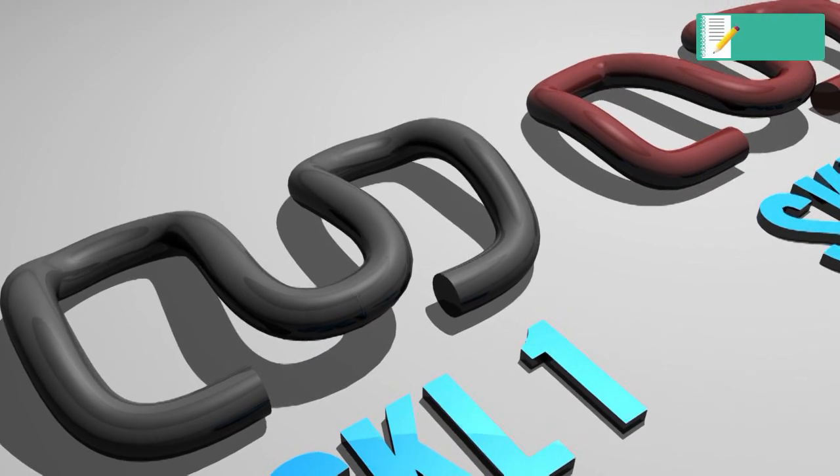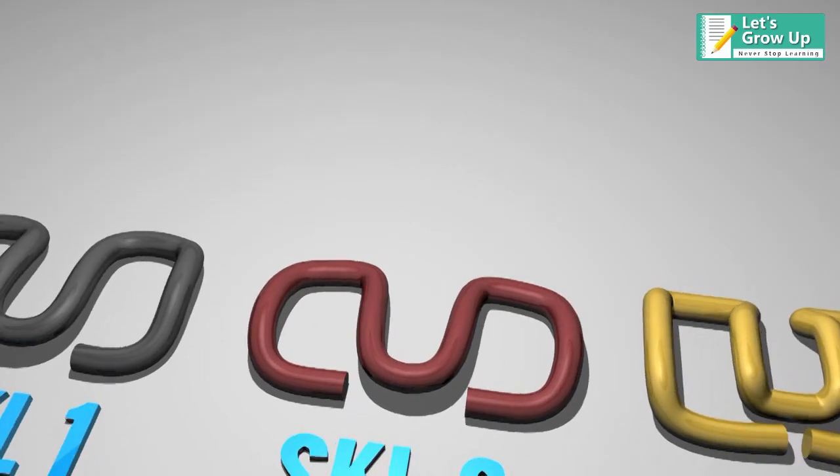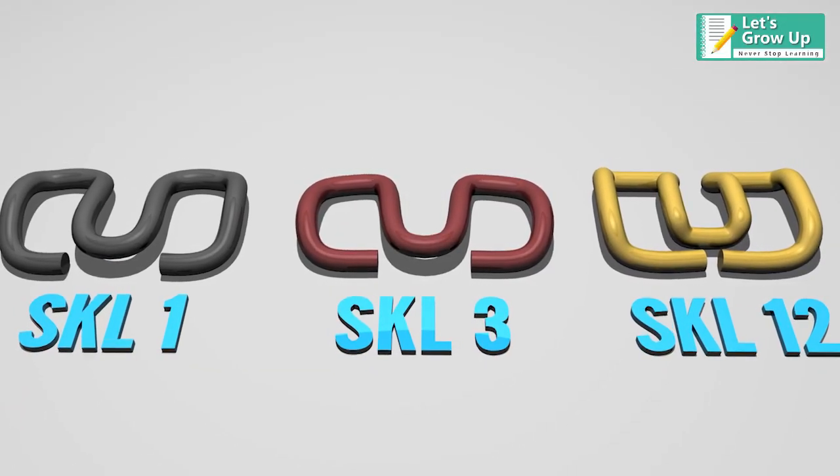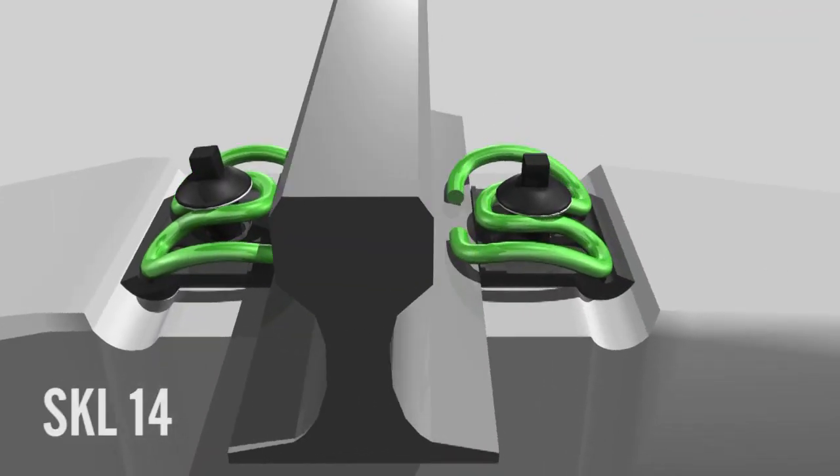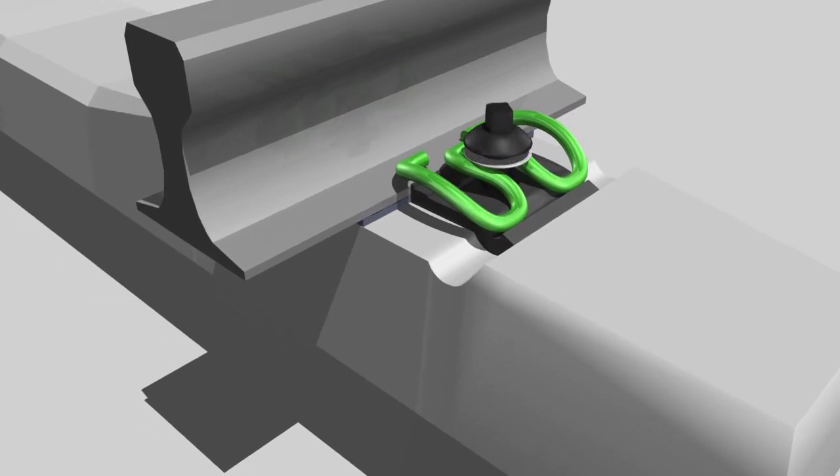There are different types of SKL rail clips including many sizes such as SKL 1, SKL 3, SKL 12, and SKL 14. Among them, the SKL 14 or W 14 rail fastening system is the most widely used type.